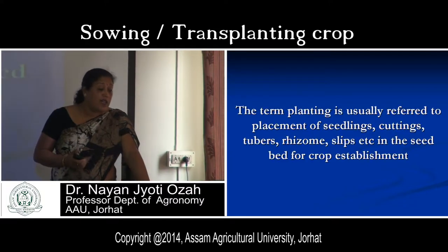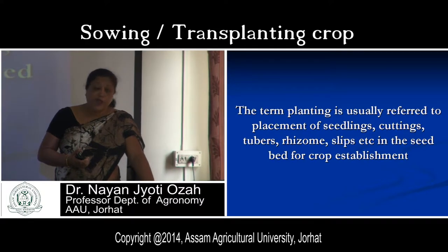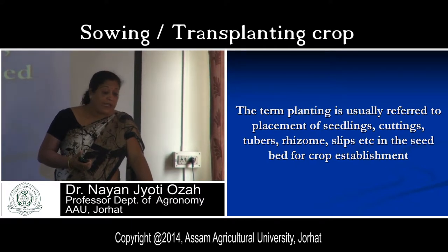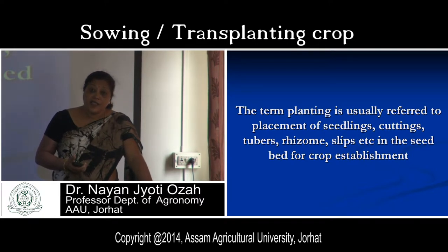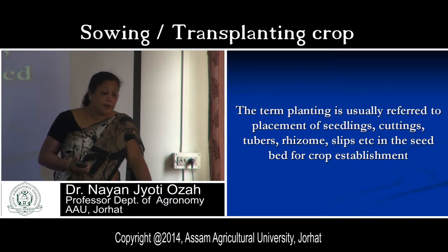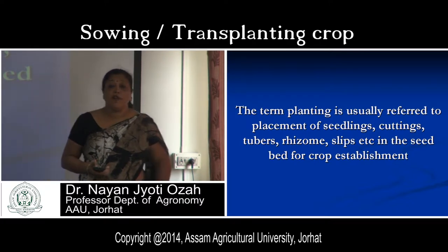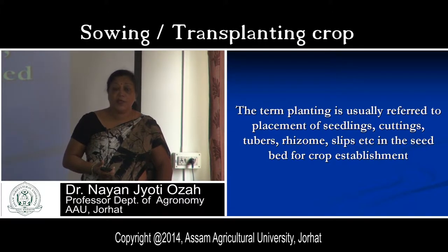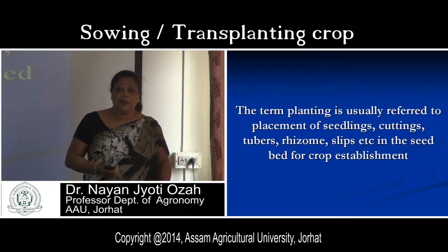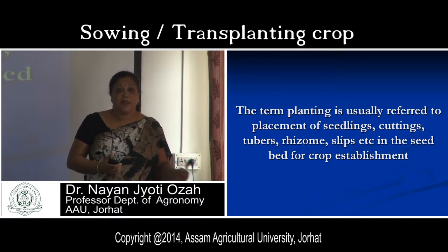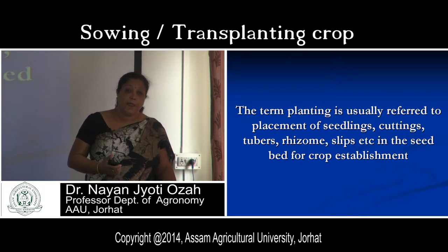The definition of planting: the term planting is usually referred to the placement of seedlings, cuttings, tubers, rhizomes, leaves, slips, etc., in the seed bed for crop establishment. Planting is used for those crops which are planted by other means — that means we do not use seeds.